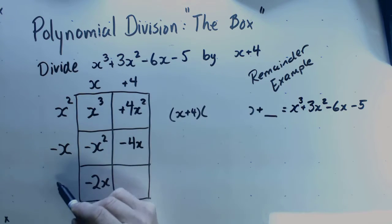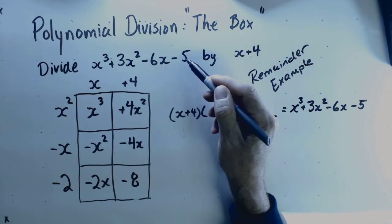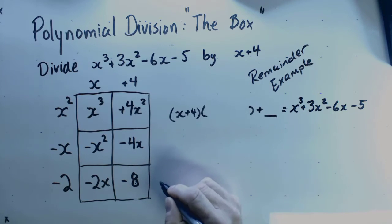x times something is -2x, so this is -2. -2 times 4 is -8. I need -5, so my remainder is +3.